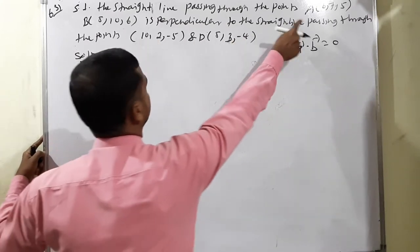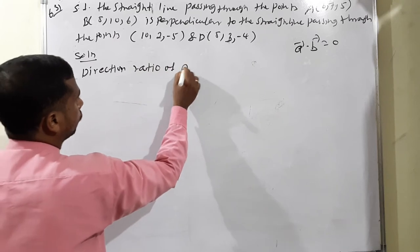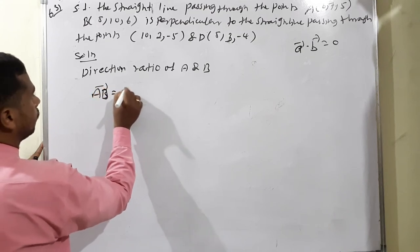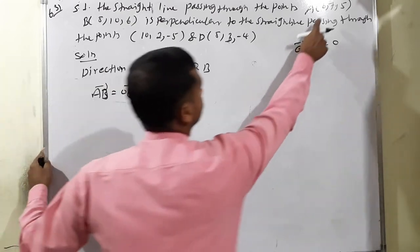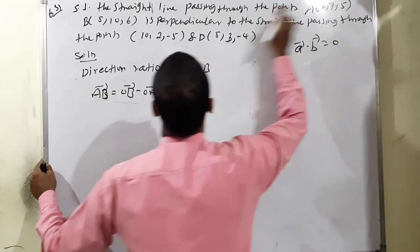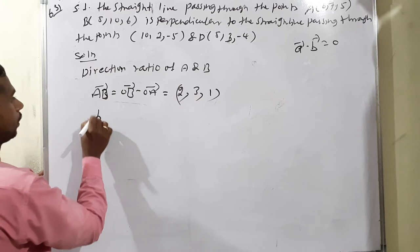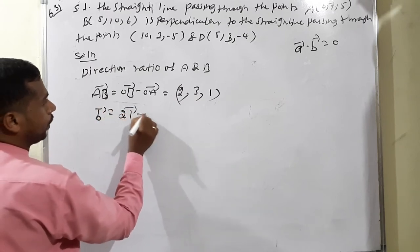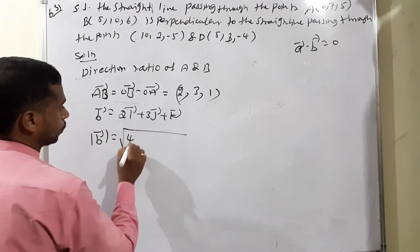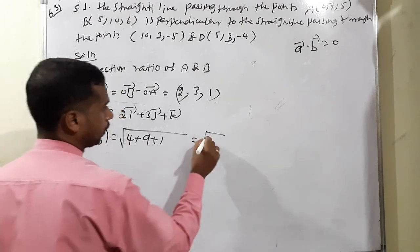Direction ratio of AB: AB vector equals OB minus OA. So 8 minus 6 equals 2, 10 minus 7 equals 3, 6 minus 5 equals 1. Therefore b vector equals 2i plus 3j plus k. Modulus of b vector equals square root of 4 plus 9 plus 1 equals square root of 14.